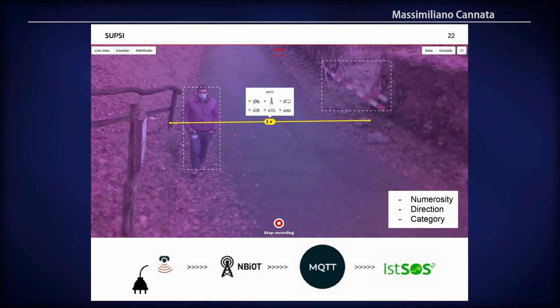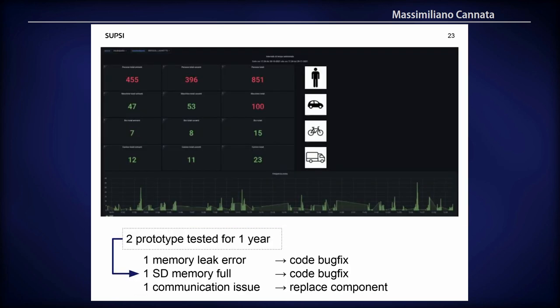What we store and communicate is the numerosity of the elements, their directions, and the category of elements that have been classified. We can then produce dashboards — built using Grafana connecting with the STA SOS software — showing the numbers of different classes of elements that have passed through the monitored area.